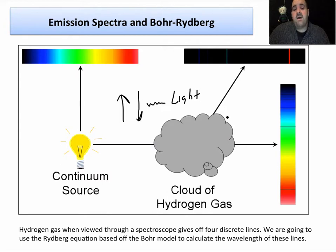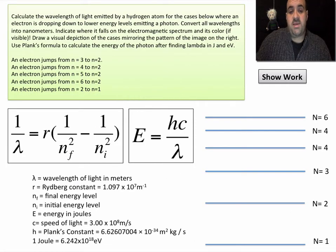This is called a continuous spectrum, this is called a line spectrum, it's discrete. We're going to use the Rydberg equation, based off of the Bohr model of the atom, to calculate the wavelength of these lines based on electron transitions.